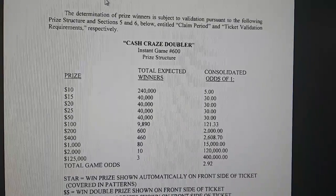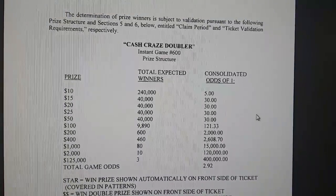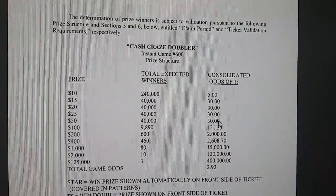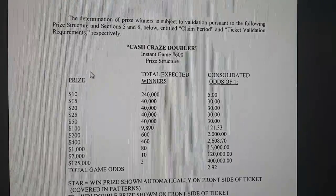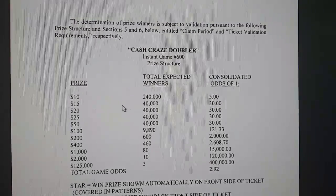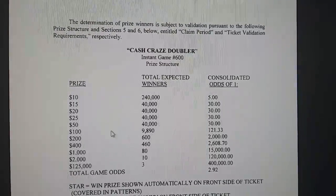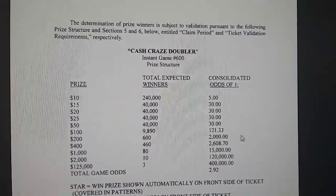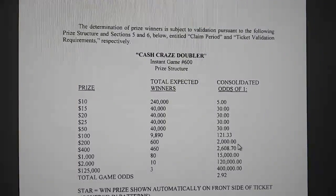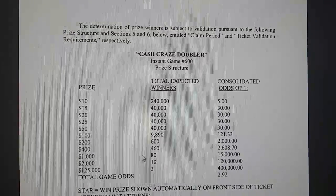This is the prize breakdown. It tells you the consolidated odds of what's in a book. Now this right here, the 30 is what's in a book, so $50 and under are in the book. So you'll get six break-evens, a $15, a $20, a $25, and a $50. To get anything over that, you'll see it's ridiculous — one in 2,000 to win $200 and one in 2,600 to win $400.